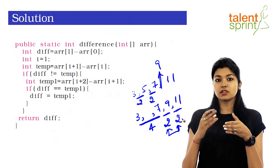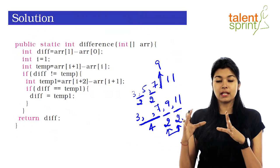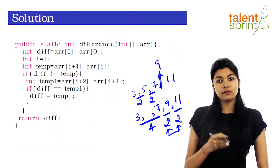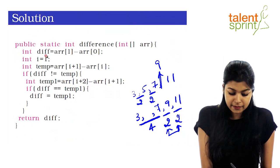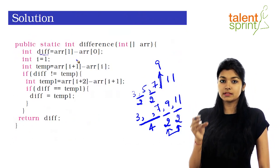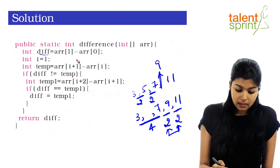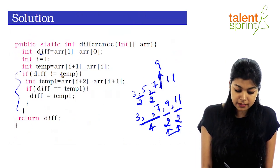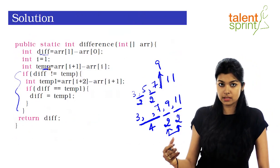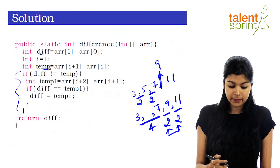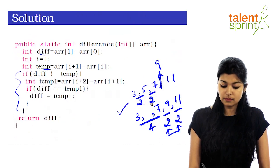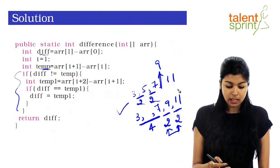In essence, we are checking the difference of three consecutive pairs to conclude what the actual AP difference is. In the function, we assign ar[1] - ar[0] as the initial difference. We then check if that difference is not equal to temp, where temp is the difference between the next two consecutive elements. If both are the same — as in our example where both differences are 2 — we can return that value.